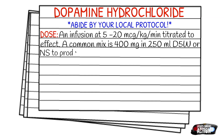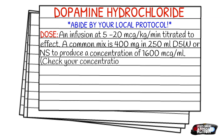That can be D5W or normal saline, producing a concentration of 1600 micrograms per mL. Always check your concentration because this is just a very common one — they do come in different concentrations. The pediatric dose is going to be 1 microgram per kilogram per minute.